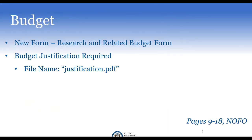We are using a new budget form this year — the Research and Related Budget Form — which will automatically integrate into your application, so you no longer have to include it as an attachment. Because this is a government-wide form, be sure to read the NOFO guidelines on pages 9 through 18 on exactly how to fill it out. All projects are now required to submit a budget justification; title the file justification.pdf and save it as a PDF so it integrates correctly.